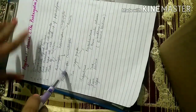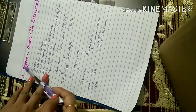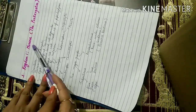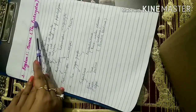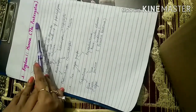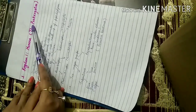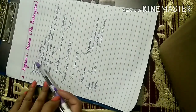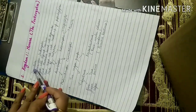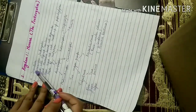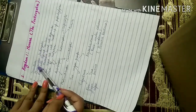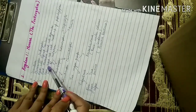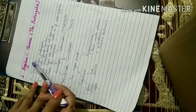Let us study Kingdom Monera in detail. Kingdom Monera includes all the prokaryotes — organisms in which the genetic material is not surrounded by a nuclear envelope, meaning they do not have a well-defined nucleus. Some features of Kingdom Monera: these organisms are unicellular, meaning their body is made up of only one cell. They are microscopic prokaryotes, visible only under a microscope. They lack a well-defined nucleus, and some membrane-bound cell organelles are also absent.